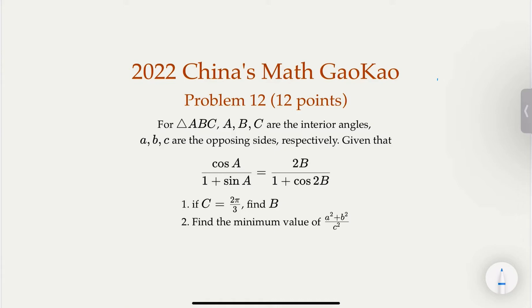The problem says: given a triangle, capital A, B, C are the interior angles and lowercase a, b, c are the opposing sides. We're given that angles A and B satisfy a certain equation. The two parts of the question are: if c is given as between 120 and 180 degrees, find b; and find the minimum value of the expression (a² + b²) / c².